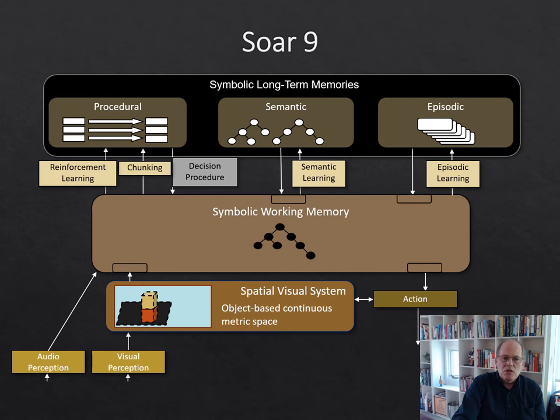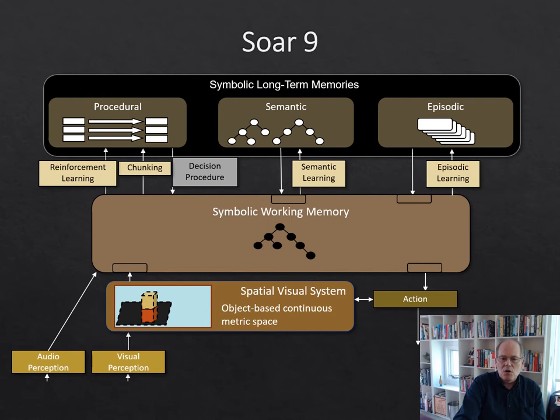Having that kind of information in working memory would be very expensive to match against, which is why we move it to a spatial visual system and then do reasoning symbolically. From there we have three different long-term memories: procedural memory, which is rule-based and controls the reasoning in the system, supporting context-dependent reasoning, planning, and meta-reasoning; semantic memory, which contains all the long-term factual knowledge; and episodic memory, which is a continual trace of the system's reasoning over time. Associated with each of these memory systems are learning mechanisms, and finally there is an action system that interfaces with the world.